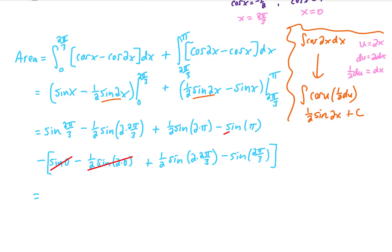Sine of 0, sine of pi, and sine of 2pi are all 0. That's going to leave us with, and then we have to remember that the sine of 2pi over 3 is square root of 3 over 2, and the sine of 4pi over 3 is negative square root of 3 over 2.